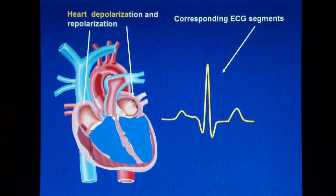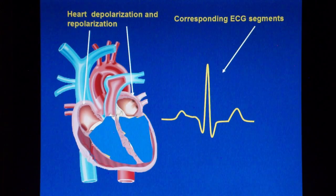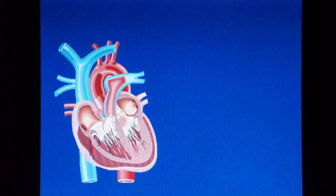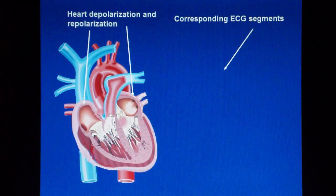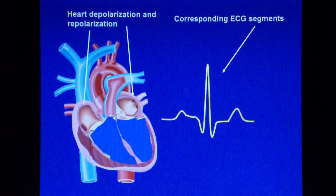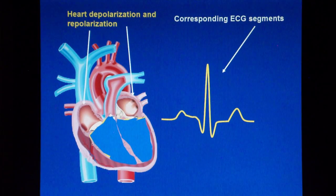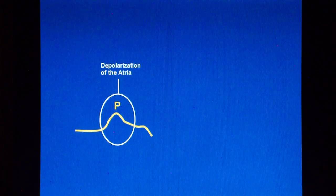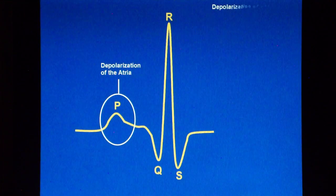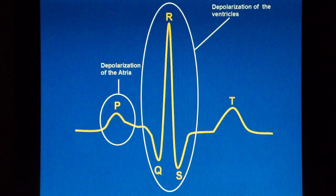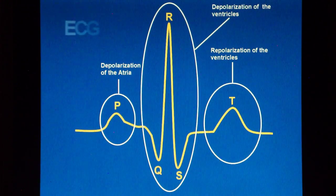We saw the sequence of events at slow speed to help understanding. Let's see it again at higher speed. Thus, the P wave represents the depolarization of the atria. The QRS complex represents the depolarization of the ventricles. And the T wave represents the repolarization of the ventricles.